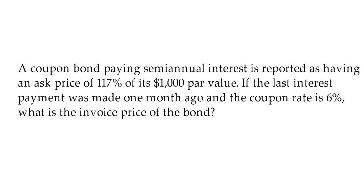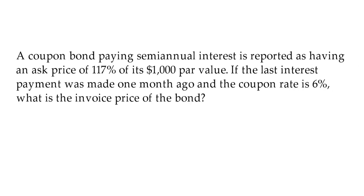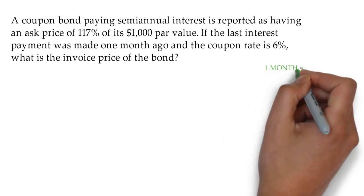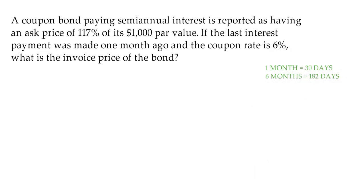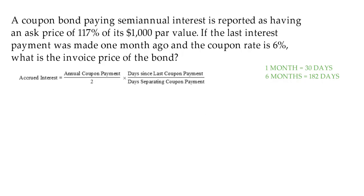A coupon bond paying semi-annual interest is reported as having an ask price of 117% of its $1,000 par value. If the last interest payment was made one month ago and the coupon rate is 6%, what is the invoice price of the bond? For simplicity, we will assume that 1 month equals 30 days and 6 months equals 182 days. The formula to calculate accrued interest is this.